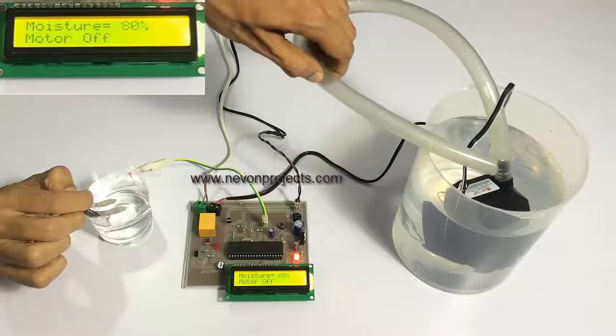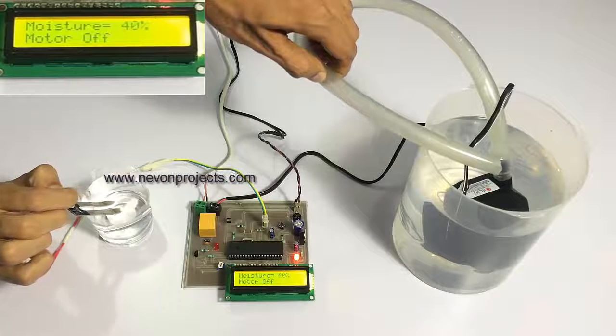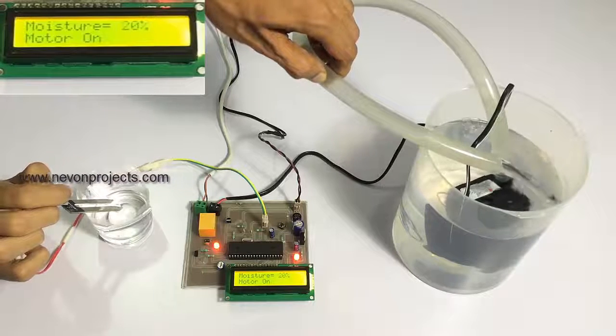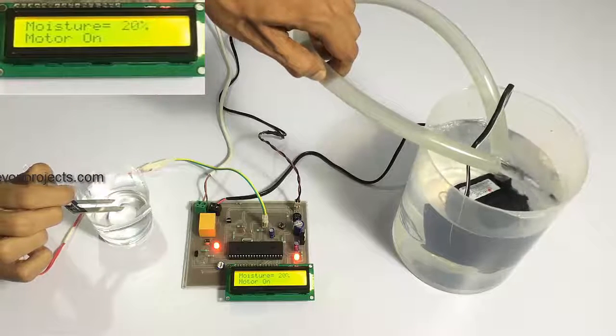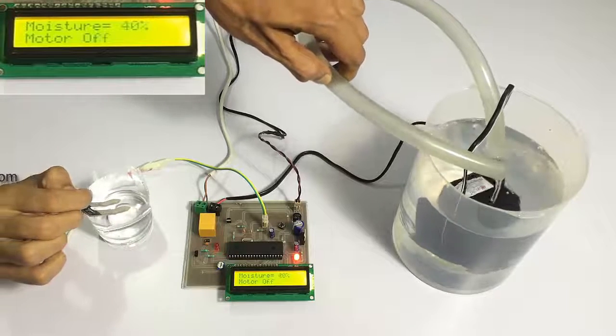As we remove it out and if it goes below 40%, it will again start the irrigation. It also displays the water content of the soil at every moment.